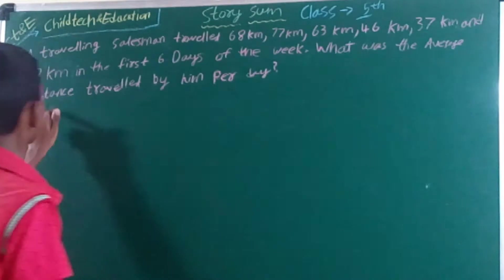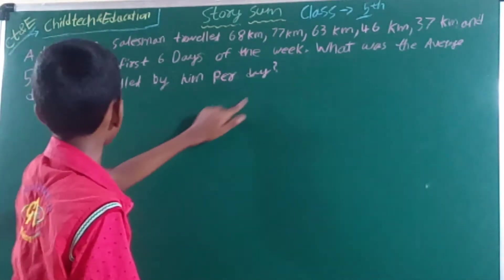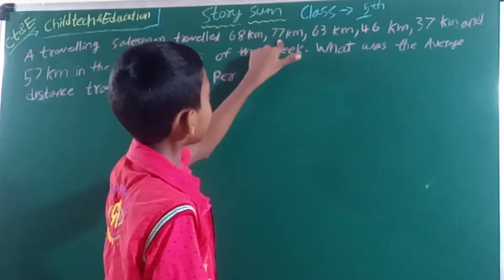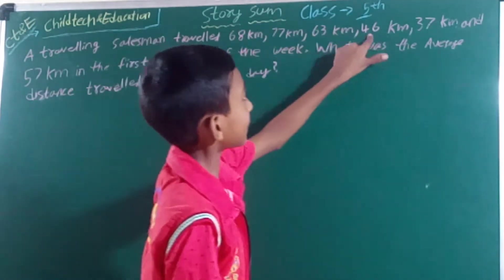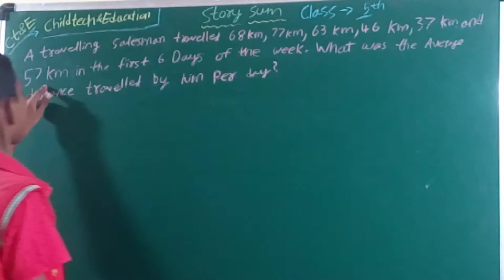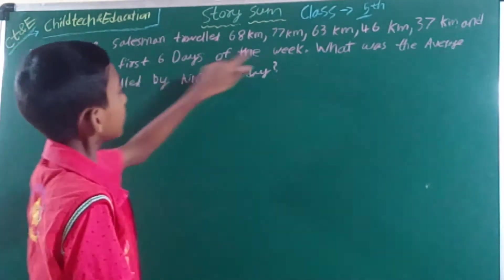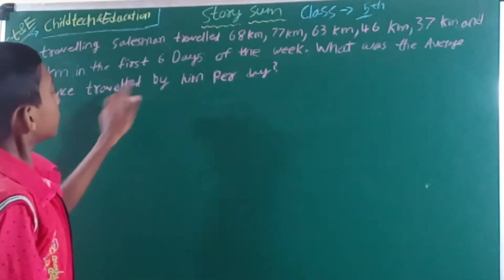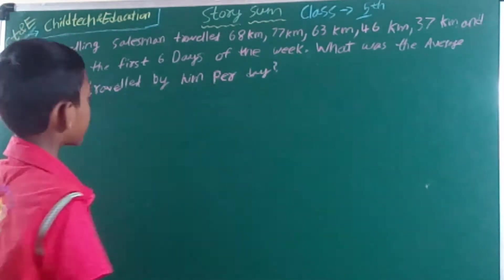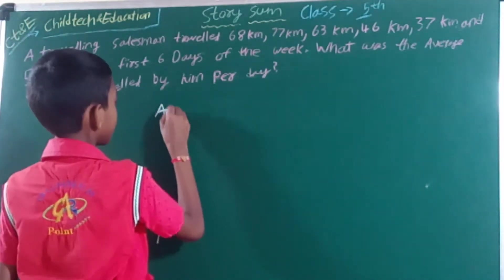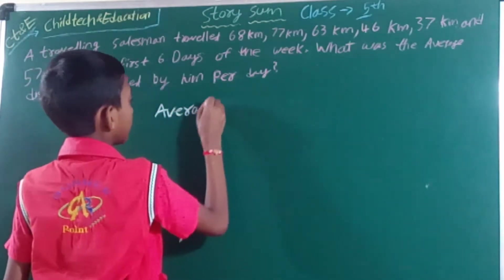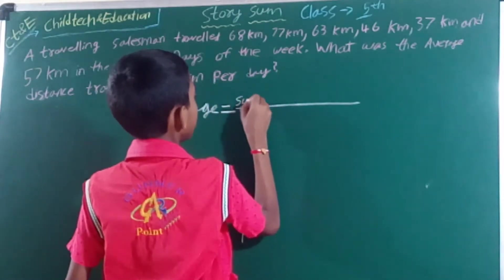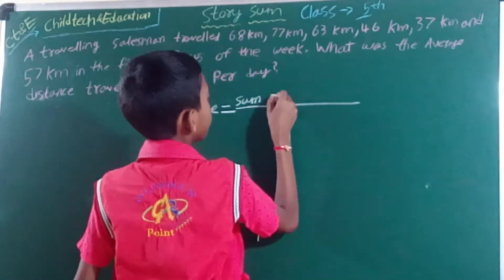What was the average distance travelled by him per day? The salesman travelled 68 km, 77 km, 63 km, 46 km, 37 km, and 57 km in the first 6 days of the week. He asked how much distance did he travel every day? So the average equals the sum of quantities.